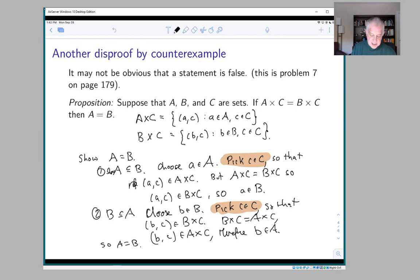Because the hypotheses allow A, B, and C to be any sets, what if C is the empty set?